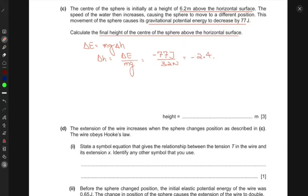Therefore, this is the change in height. We want the final height. The final height will be the difference between the two. 6.2 meters which is above minus 2.4. So this gives you 3.8 meters.